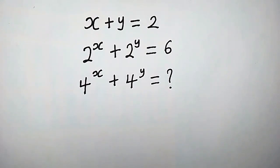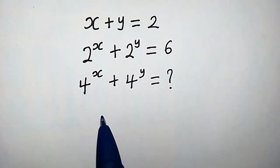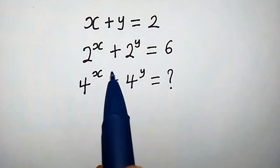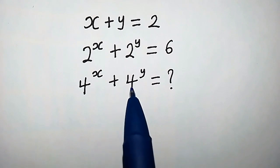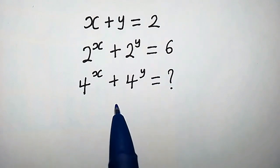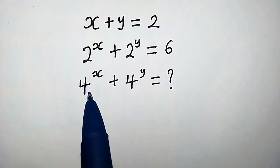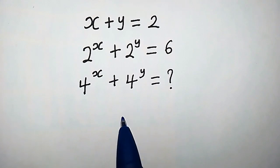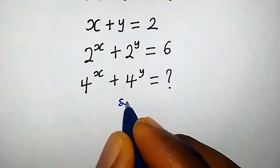Here we have a system of equations: x plus y equals 2, and 2 to the power of x plus 2 to the power of y equals 6. How do we find the value of 4 to the power of x plus 4 to the power of y?